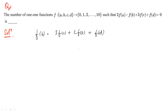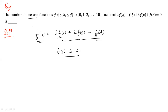Clearly f(c) cannot exceed 3, because if it is 4 or more, the right side becomes 12 or more, which exceeds the maximum value of f(b). Also, since f is one-to-one, all of f(a), f(b), f(c), f(d) must be distinct. If, say, f(b) = f(d), cancelling gives 3f(c) + 2f(a) = 0, forcing both to be 0, which violates injectivity.